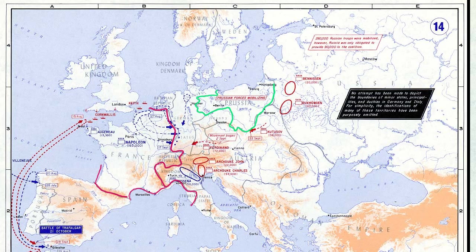Then you have the Austrian Empire, which encompasses much more than just the modern nation of Austria. And then you have the Russian Empire, which give or take looks not too different from Russia today.